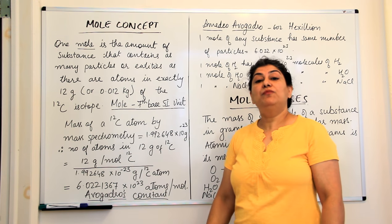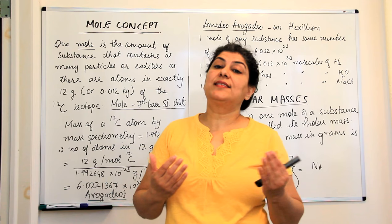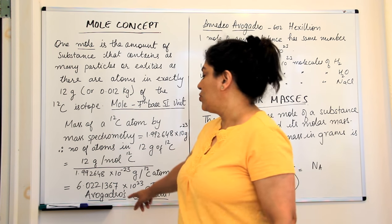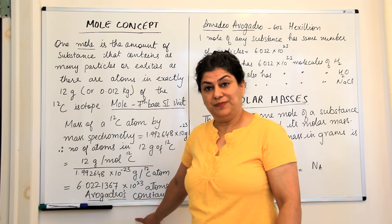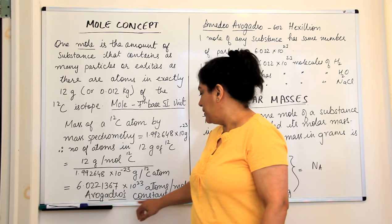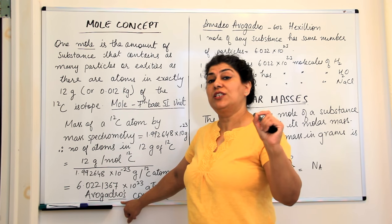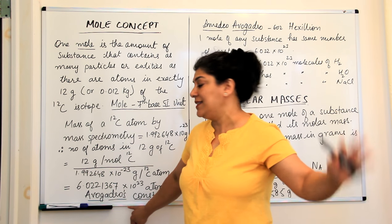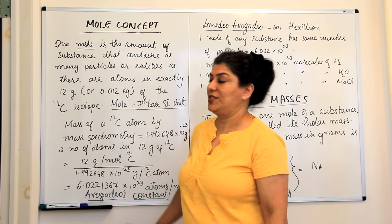This number came to be known after a scientist, Amedio Avogadro and it was called the Avogadro's number. Avogadro's number and since it is constant for one mole of any substance, this is also known as the Avogadro's constant.